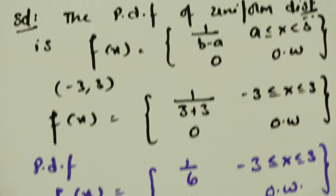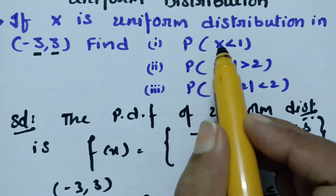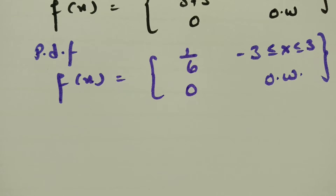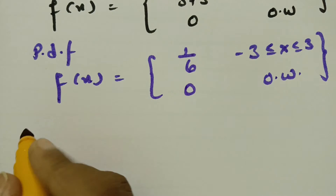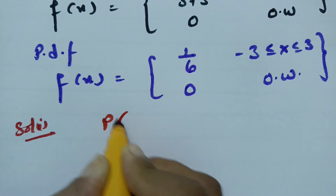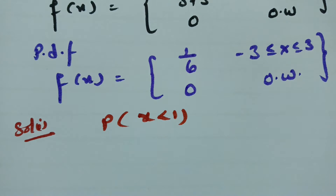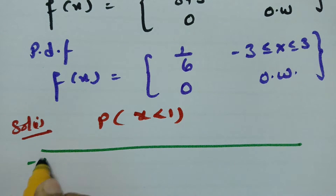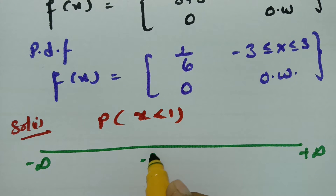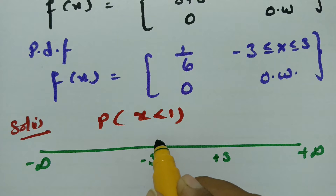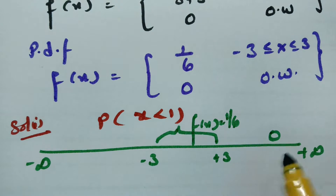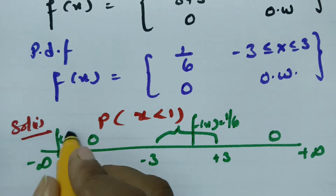Solution 1: we have to find the probability of X less than 1. The distribution is defined from minus infinity to plus infinity, with f(x) = 1/6 between -3 and +3, and f(x) = 0 elsewhere.